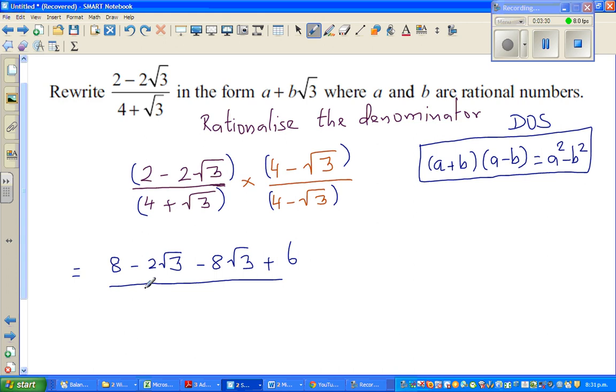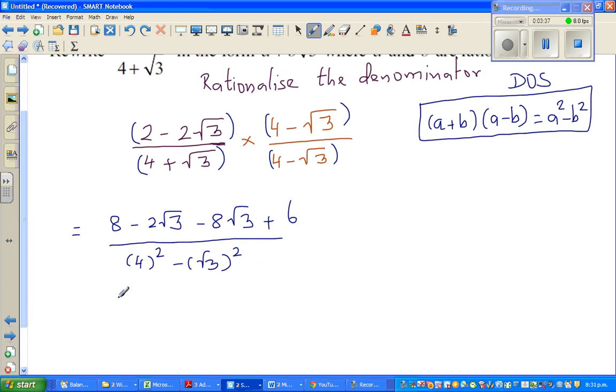Using DOS, I can say this is 4 squared minus root 3 squared. So the next step would be 8 plus 6 is 14. Oh, 8 plus 6 is not 16, it is 14. 8 plus 6 is 14 minus 10 root 3 over 16 minus 3, which is nothing but 14 minus 10 root 3 over 13.